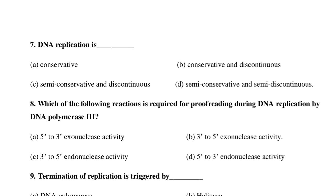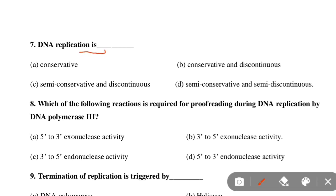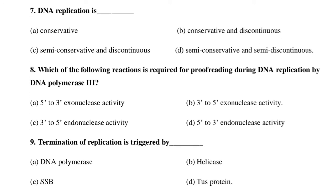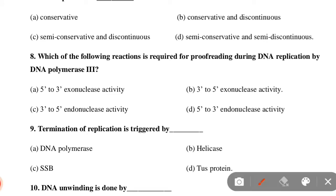Next MCQ: DNA replication is — Option A: conservative and discontinuous, Option B: semi-conservative and discontinuous, Option C: semi-conservative and continuous, Option D: semi-conservative and semi-discontinuous. Option D is correct — semi-conservative and semi-discontinuous.